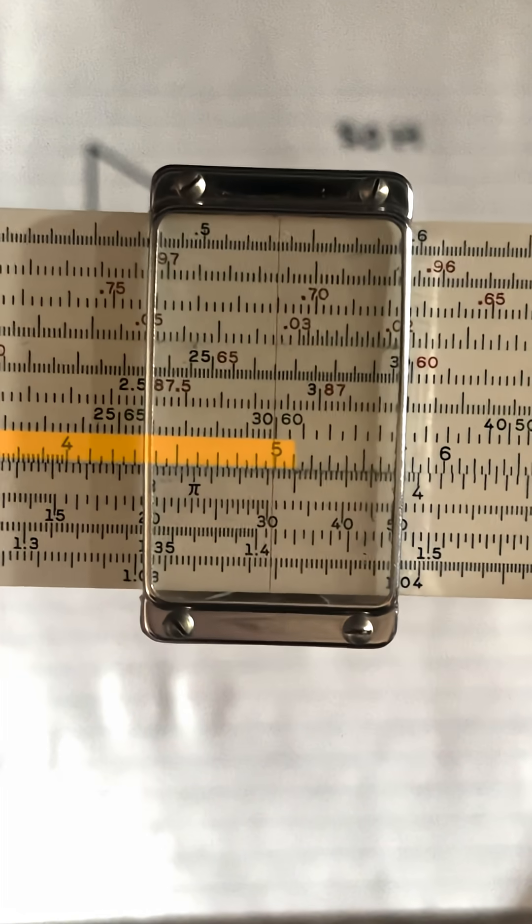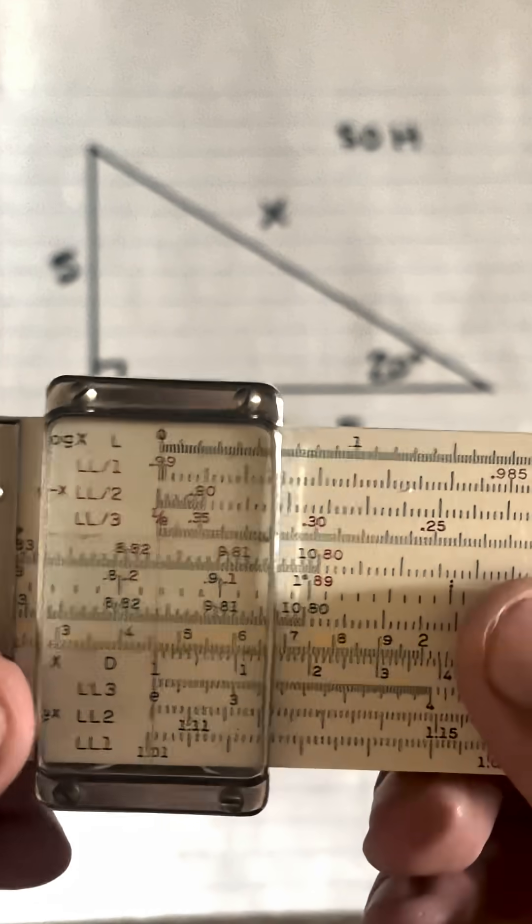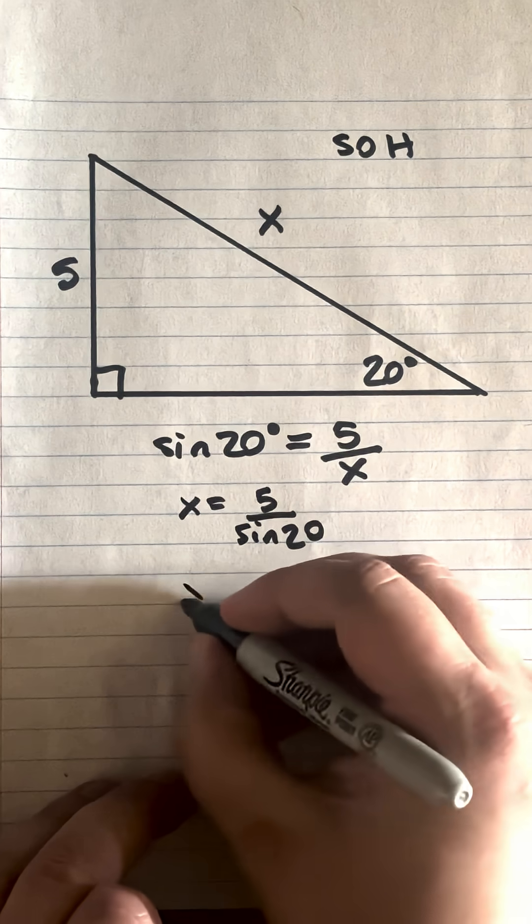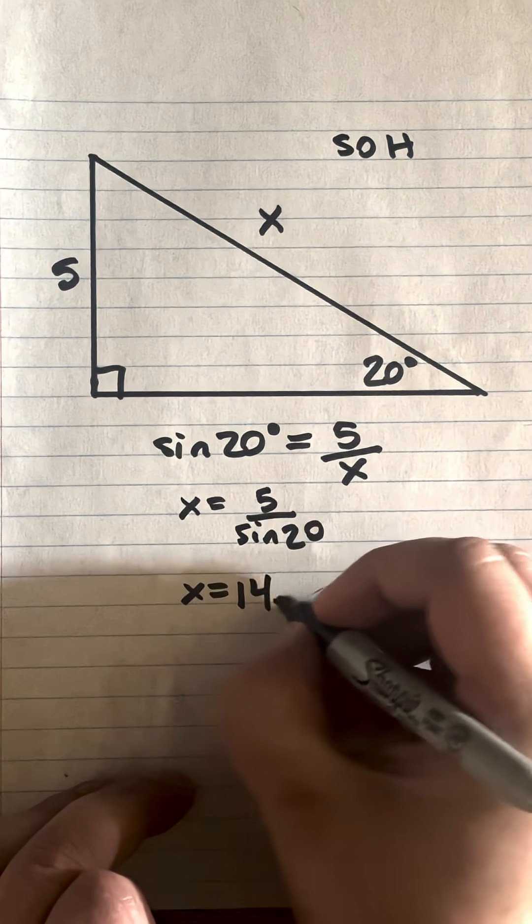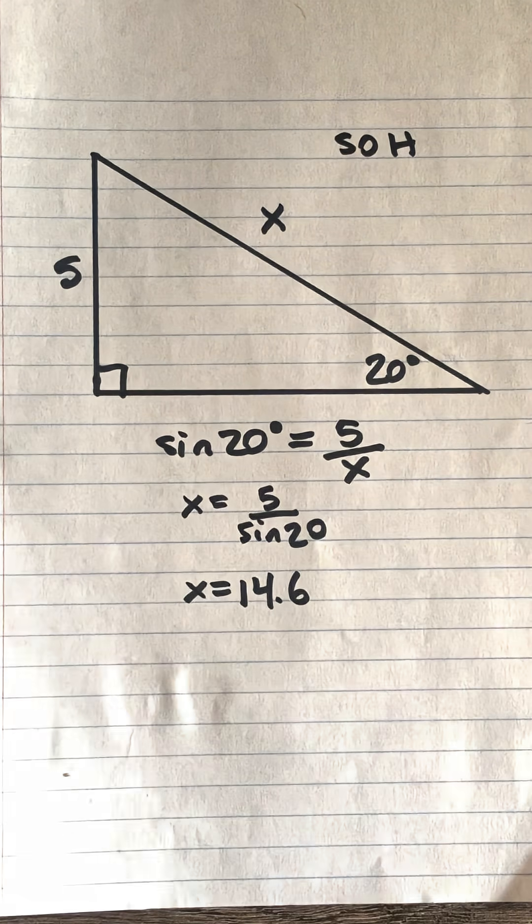Then move the hairline to the left index on the D scale, and that gives us 14.6 on the C scale. X equals 14.6. Let's double check that: 5 divided by sine 20.